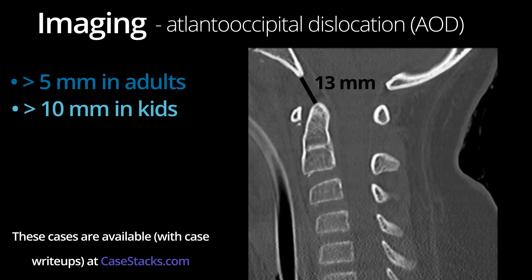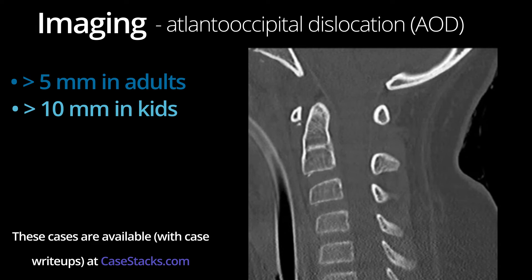Over time, you will develop a gestalt for what's normal. However, when you first start on call, it may be useful to measure the basion-to-dens distance on all pediatric trauma C-spines. As we scroll from side to side, there is further evidence of AOD, with the atlanto-occipital joints being far too wide.